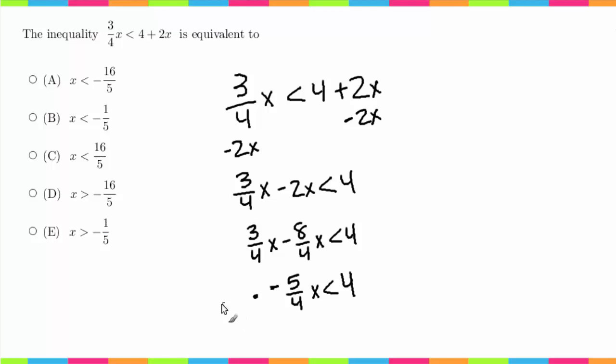So I'm gonna multiply it by negative 4/5 and I'm gonna do the same thing here. Now there's a special rule for inequalities, and it's that whenever you multiply or divide by a negative, the sign flips.